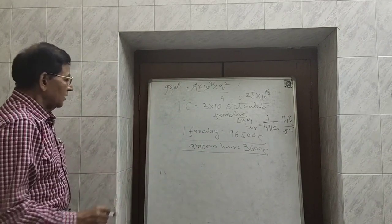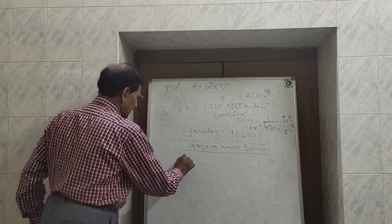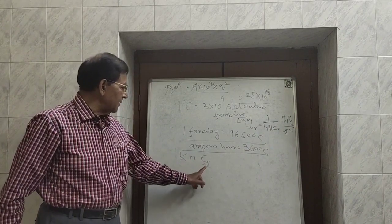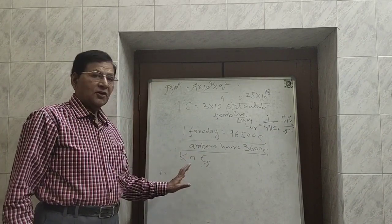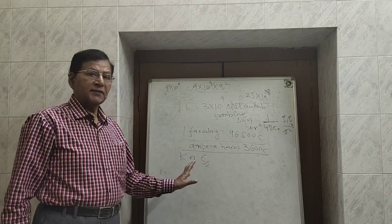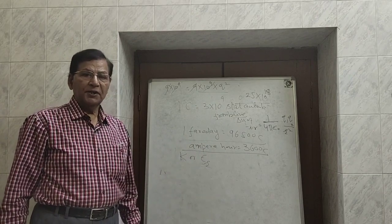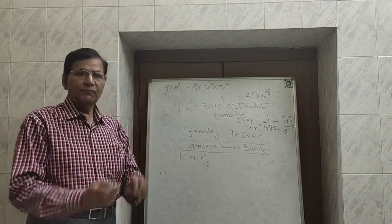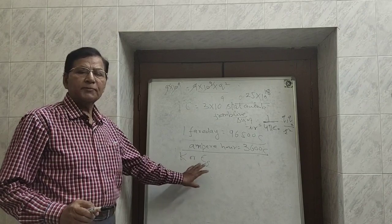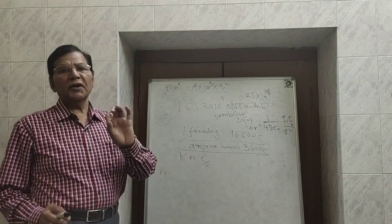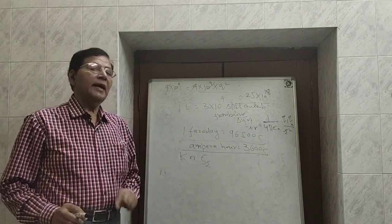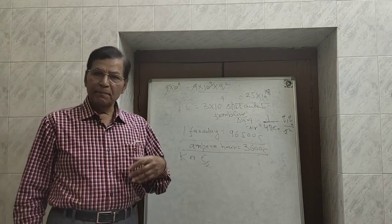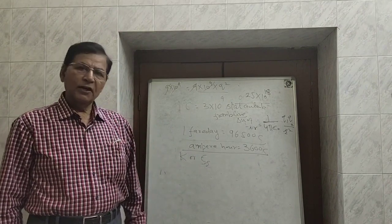The value of capital K or epsilon-r, known as relative permittivity, dielectric constant, or specific inductive capacity of the given medium, cannot be less than 1. The minimum value of K or epsilon-r is 1, and that is for air or vacuum. Its maximum value is infinite, and that is for metals.